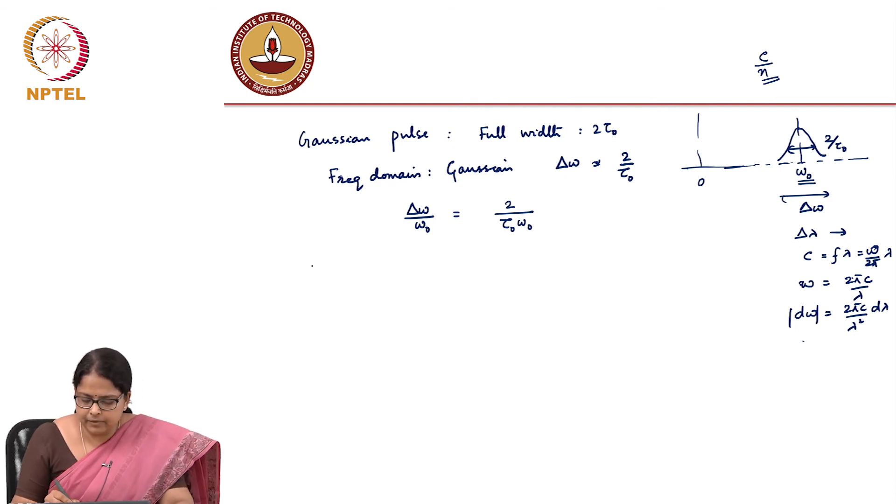So let us take the case of our 25 gigabaud transmission. This is my baud rate, my bit slot is 1 by 25.04 nanoseconds which is 40 picoseconds.